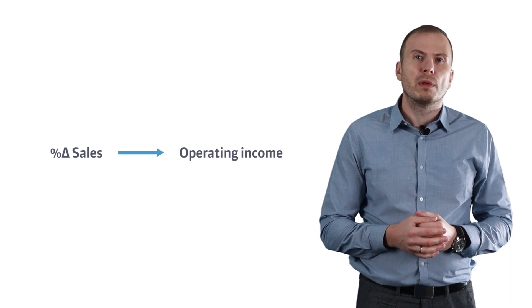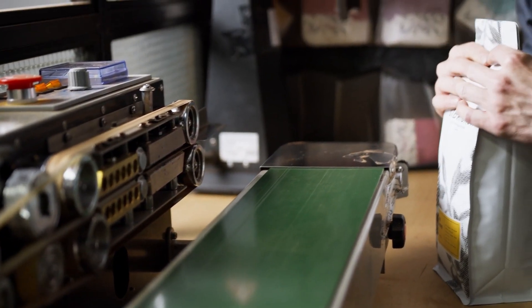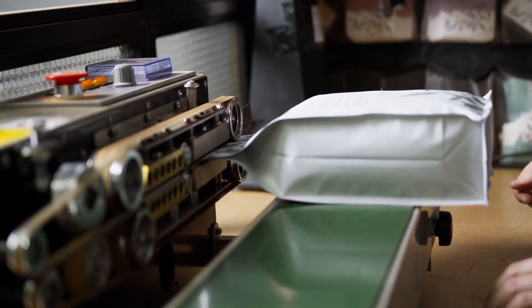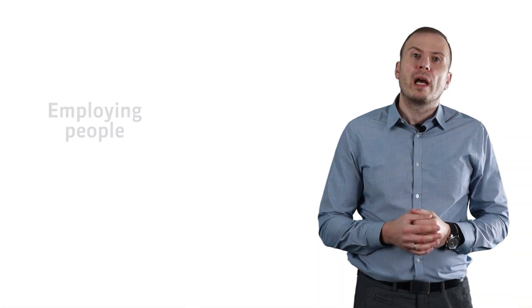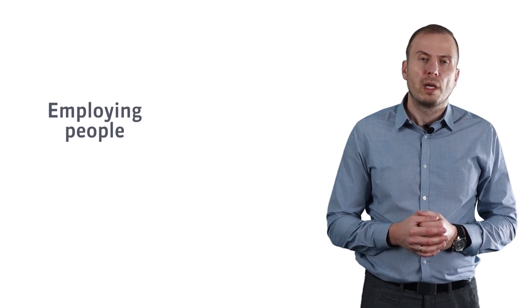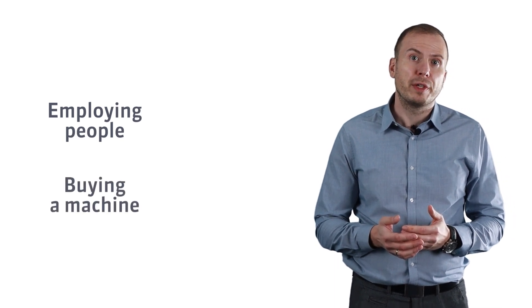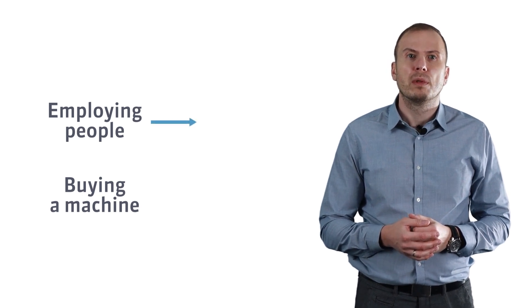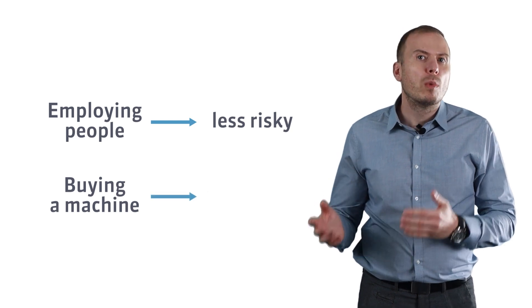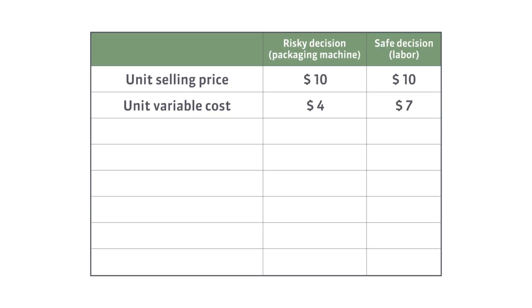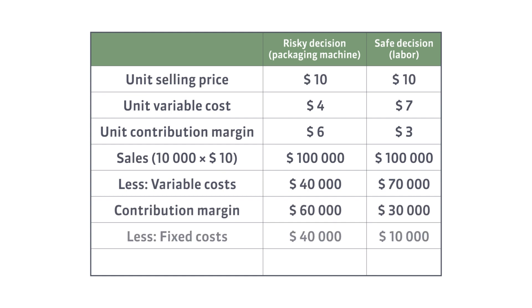Let me show you an example of how to use this formula. A company manager is considering whether to hire people to pack their products or to buy a packaging machine. Employing people means higher variable costs, and purchasing a machine means higher fixed costs. Let's call hiring people the safe decision and buying a machine the risky decision. You can see the relevant data at a sales level of 10,000 units on the screen.